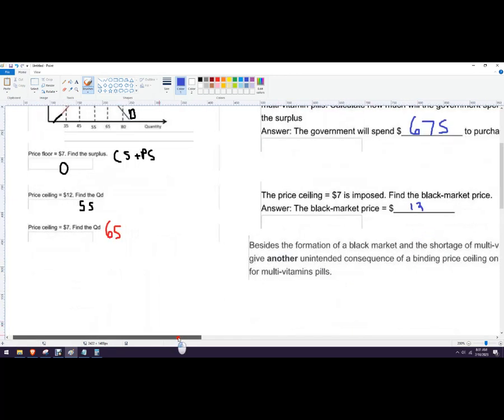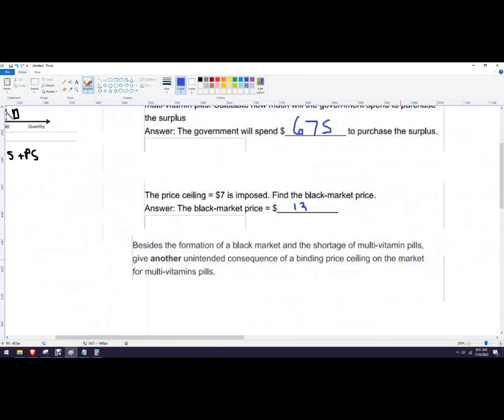It says, finally, besides the formation of a black market and shortage of multivitamin pills, give another unintended consequence of a binding price ceiling on the market. Okay. So there's a couple because these are other things that might happen. So one is the quality might go down.